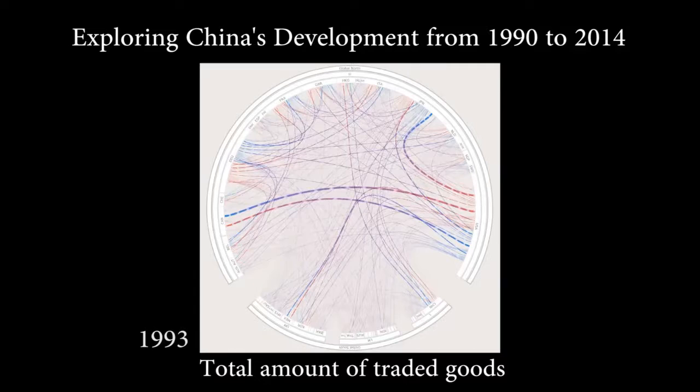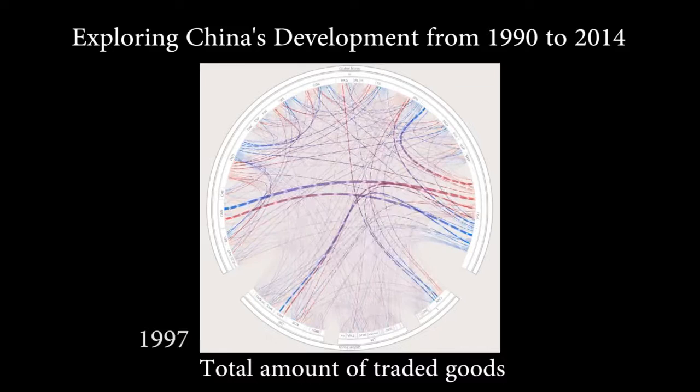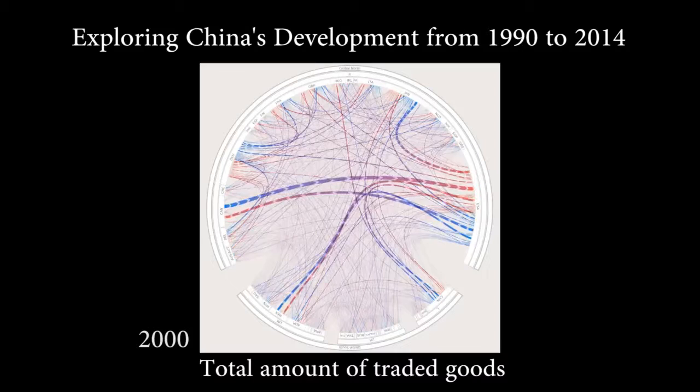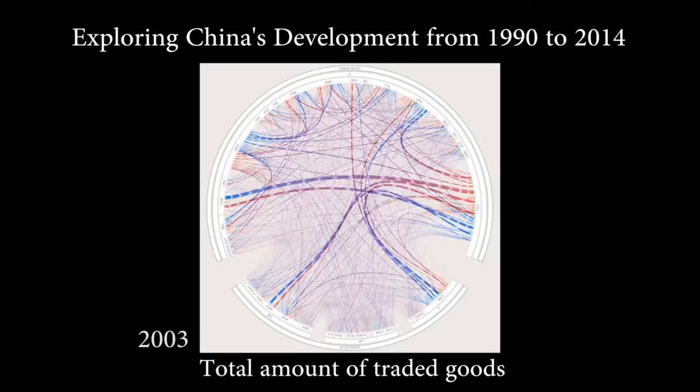This visualization allows the user to explore and compare the development of certain countries and commodities. Analyzing the total amount of traded goods, one can clearly see the growing impact of China on the global trade network. Notice how the Global South is constantly growing over time.